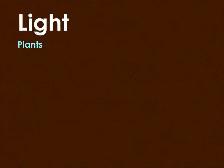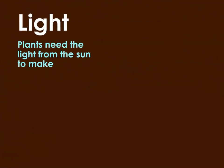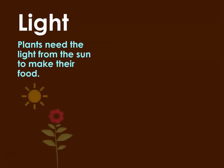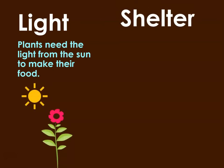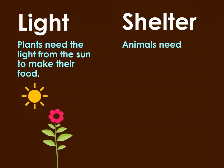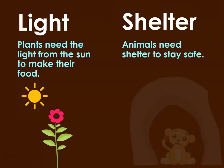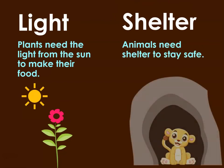Light: Plants need the light from the sun to make their food. Shelter: Animals need shelter to stay safe.